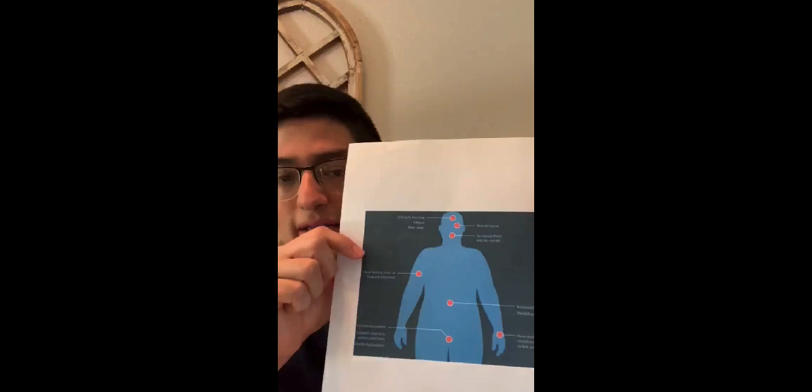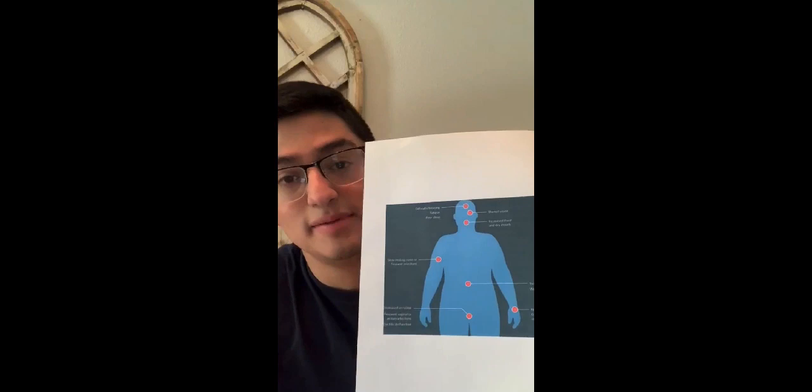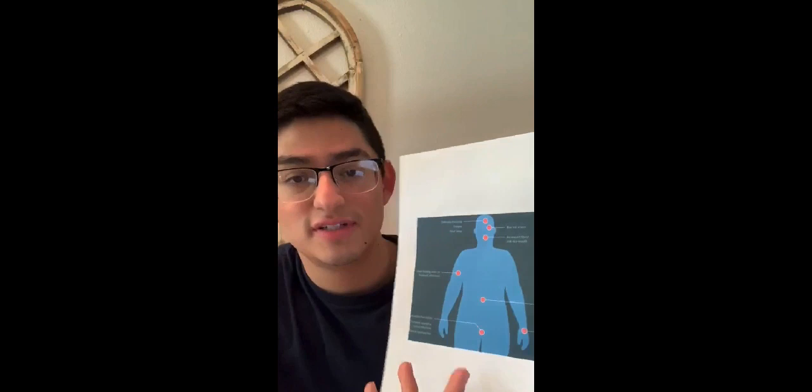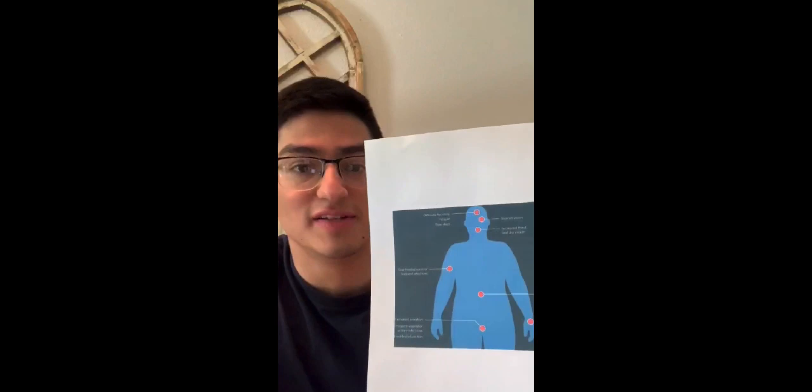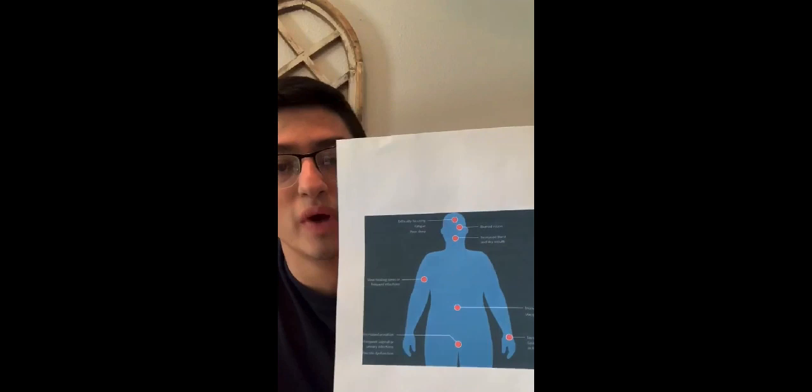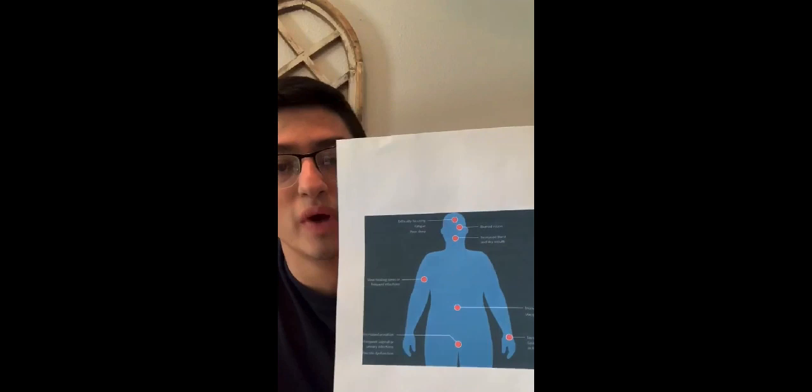Here is a diagram of a human body. The red dots signify parts of the body that could be affected by type 2 diabetes. These include blurred vision, increased thirst, dry mouth, frequent urination, increased vaginal or urinary infections, tingling in the feet and hands, increased hunger, and weight gain. These red dots are explaining what the symptoms might feel like when you have type 2 diabetes.